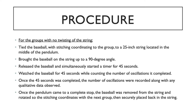For groups one and two I was not going to be twisting the string, so I started by tying the baseball to the 25-inch string located in the middle of the pendulum. I also made sure that the stitching coordinated with the group, so group one had horizontal stitching and group two had vertical stitching. Then I brought the baseball up to a 90-degree angle and as I released the ball I started a timer for 45 seconds. During the 45 seconds I was counting the number of oscillations being completed, and once the 45 seconds was up I recorded the number of oscillations and any qualitative data that I observed. Then I allowed the pendulum to come to a complete stop, removed the baseball from the string, and rotated it for the next group.